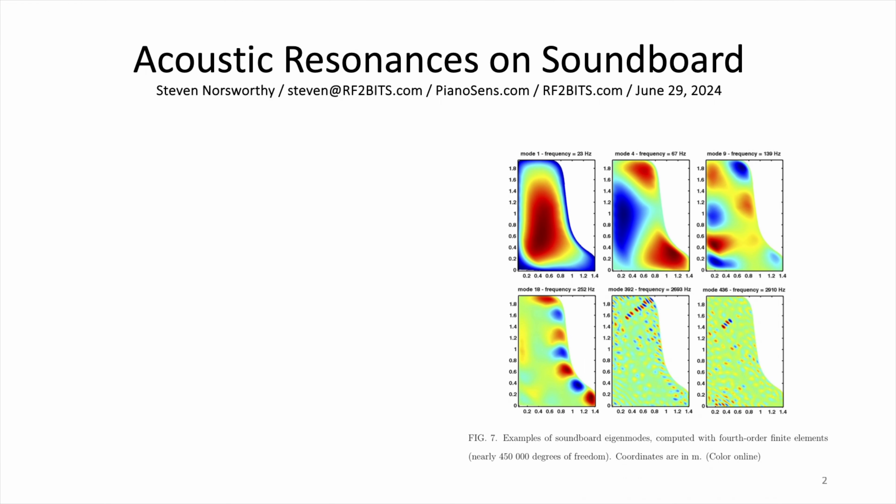The picture on the right shows the eigenmode resonances of a Steinway-D soundboard. There are six pictures here. The one on the upper left is the eigenmode resonance of 23 hertz, and the one on the lower right is the one from 2900 hertz, and the ones in between are in between frequencies.